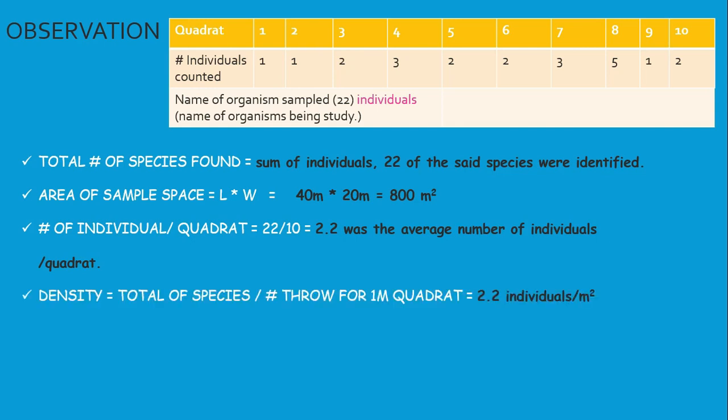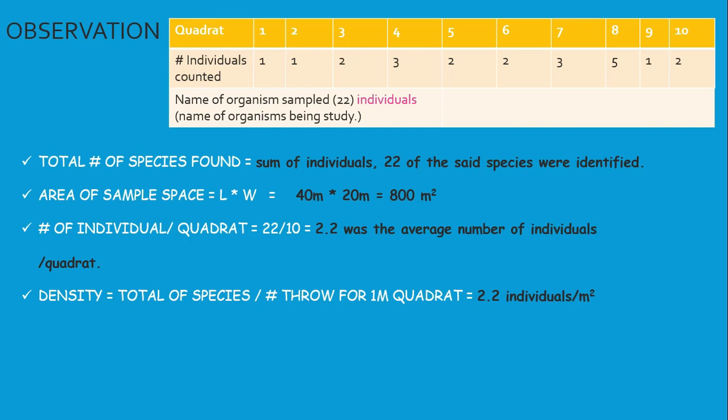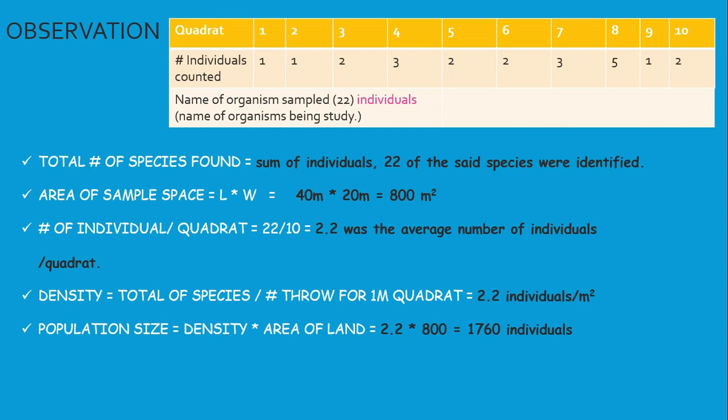The density would be the total species divided by the total throws for the 1 meter quadrat, giving us 2.2 individuals per meter square. Population size equals density multiplied by area of land: 2.2 multiplied by 800 gives us 1,760 individuals for the area sampled.